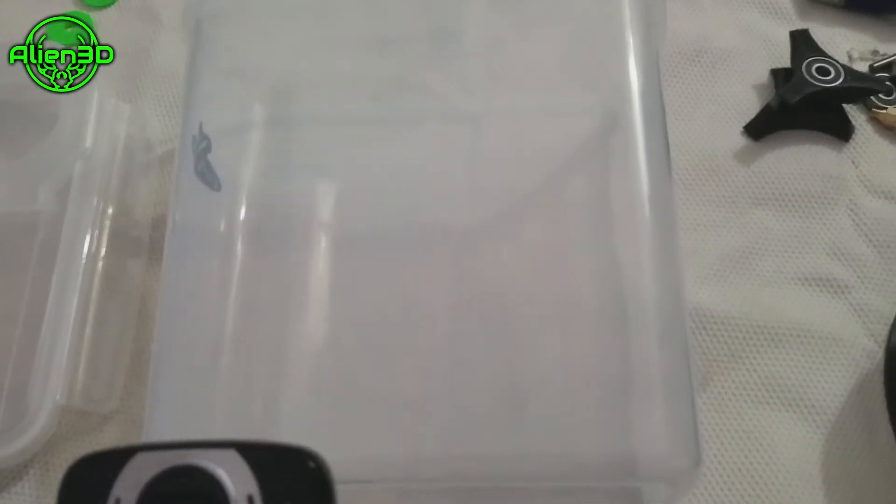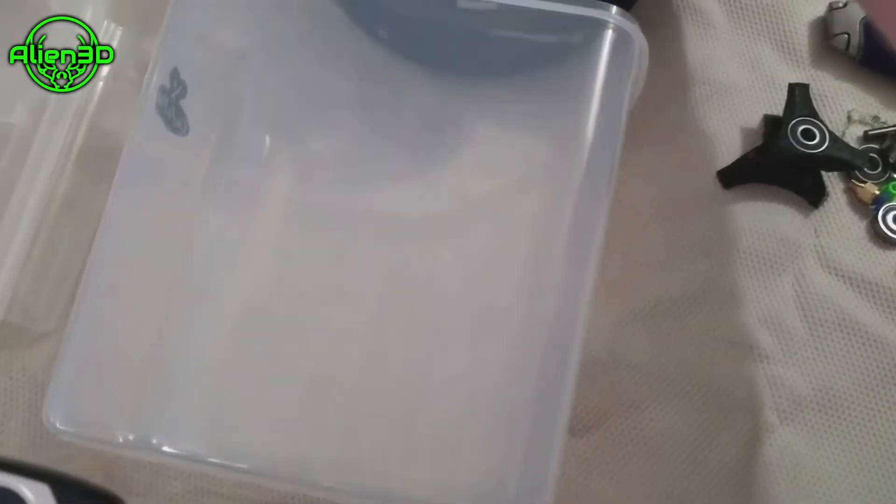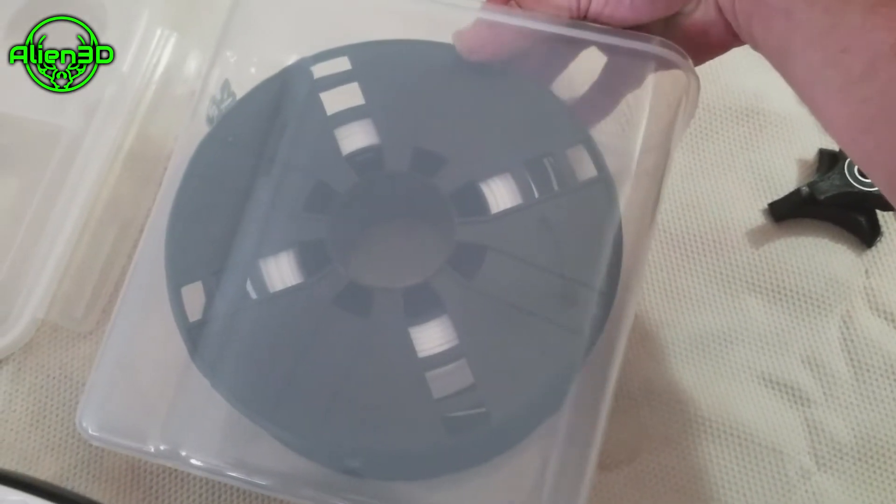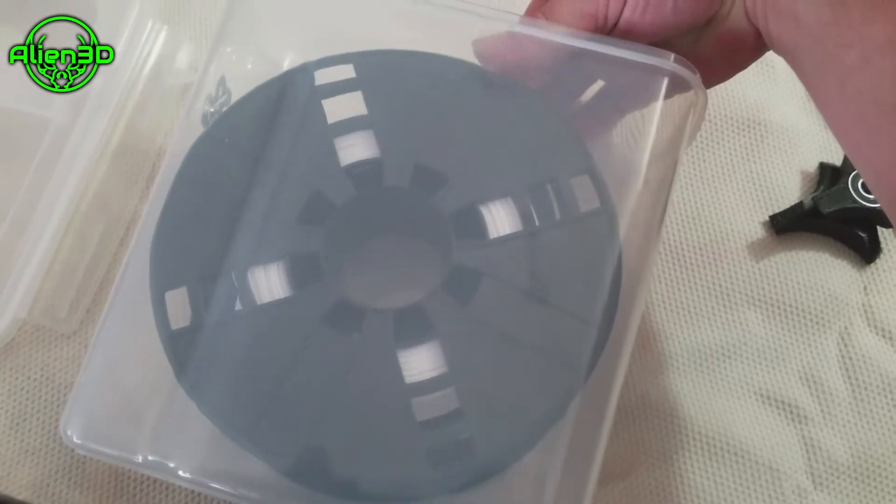We're going to take these pieces here and glue them in. On our cereal box we need to figure out where to put these. I'm going to stick the filament in and guesstimate where I want these.